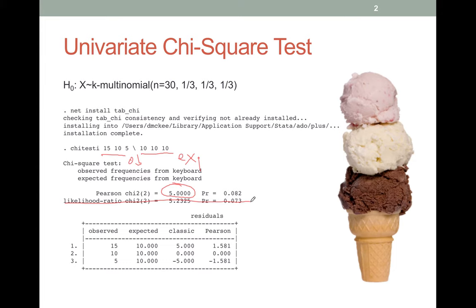It's nice enough to give you the p-value as well. In this case, p-value is 0.082, cannot reject, and you should be good to go on estimating univariate chi-square tests.